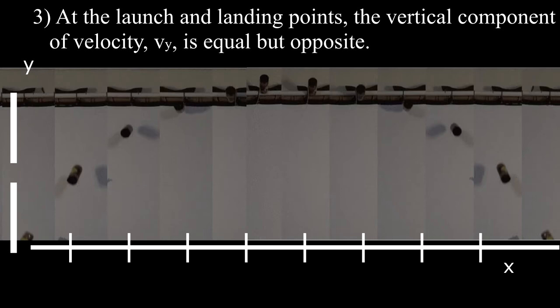At the launch and landing points, the vertical component of velocity v_y is equal but opposite. For example, if v_y0 is +3 at the launch point, then v_y will be -3 at the landing point. The x component of velocity v_x never changes.